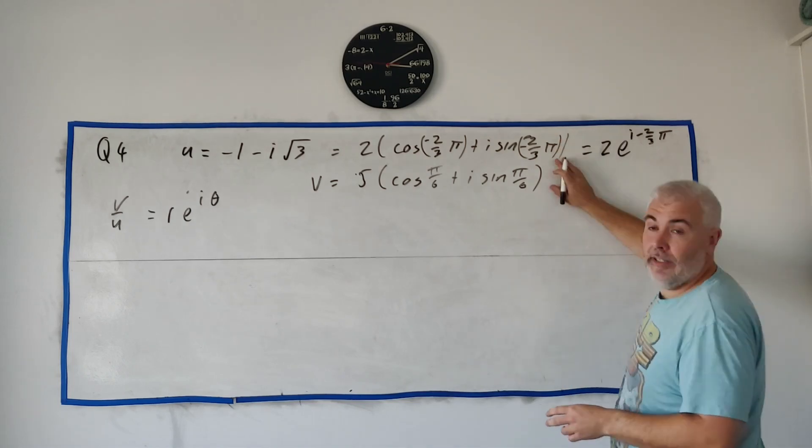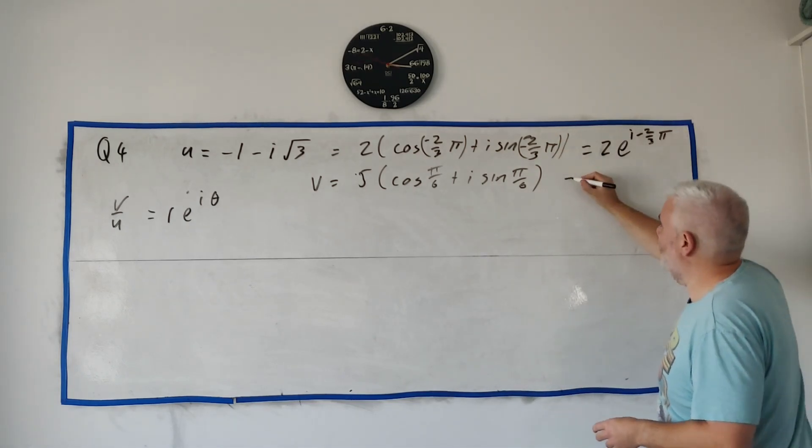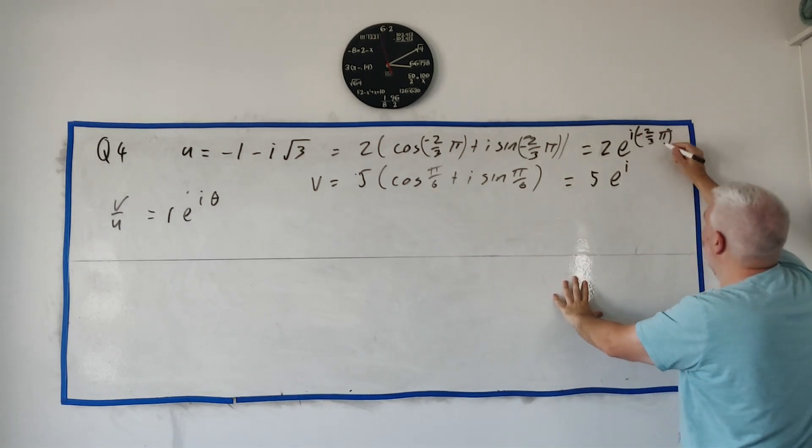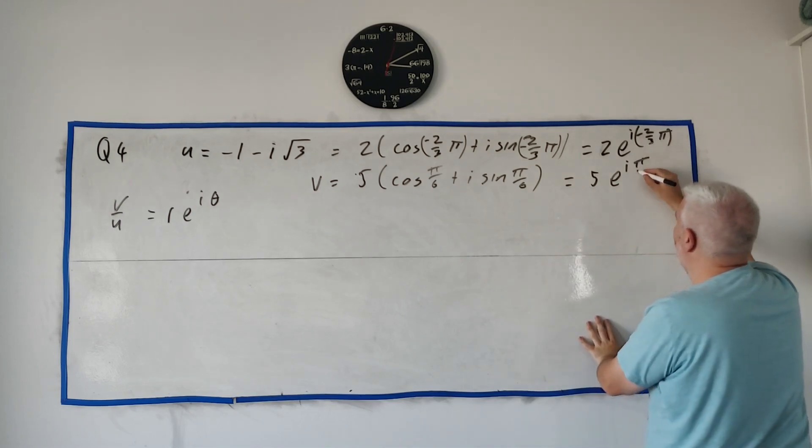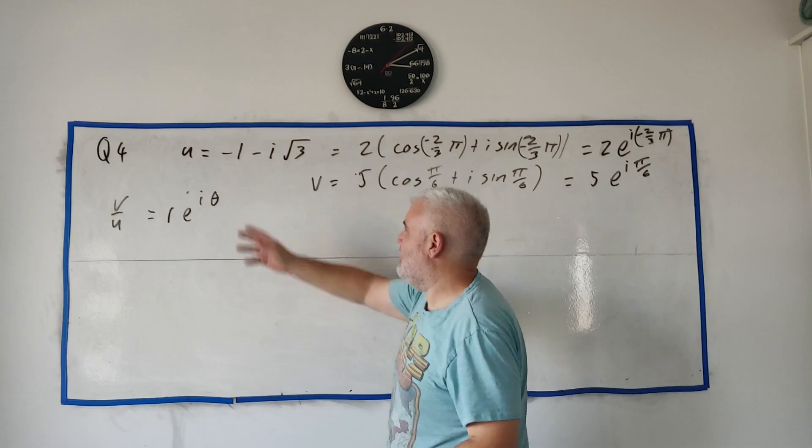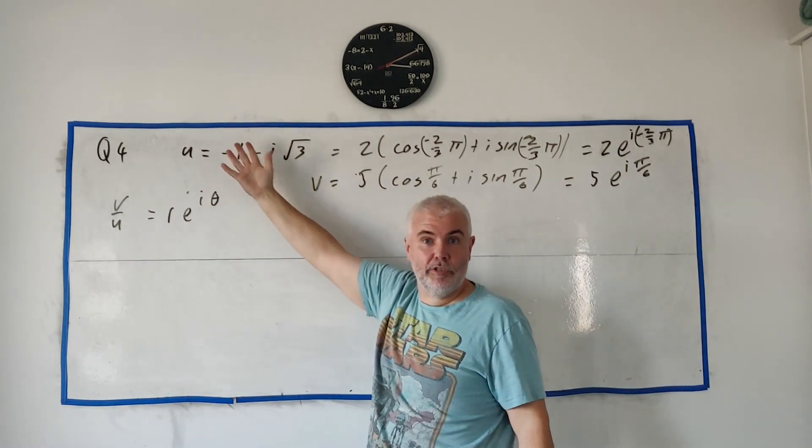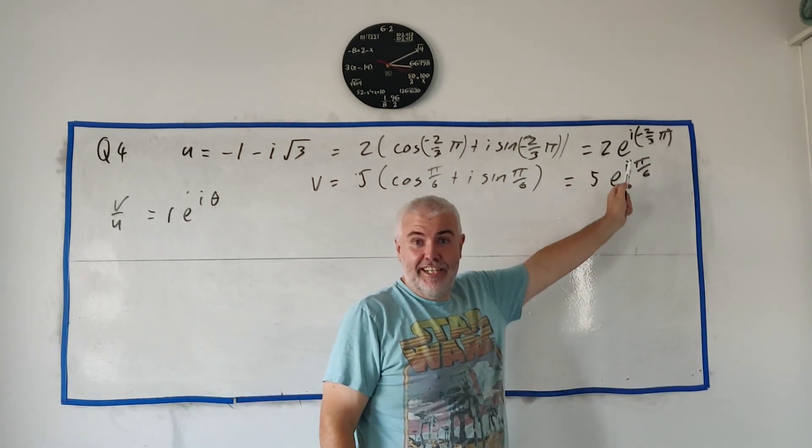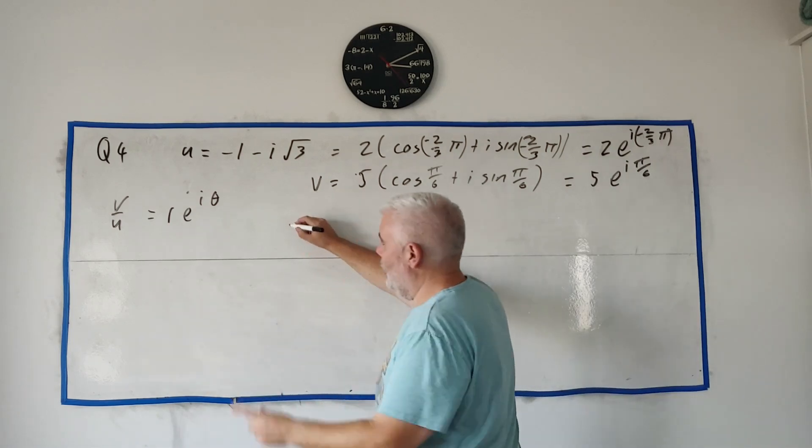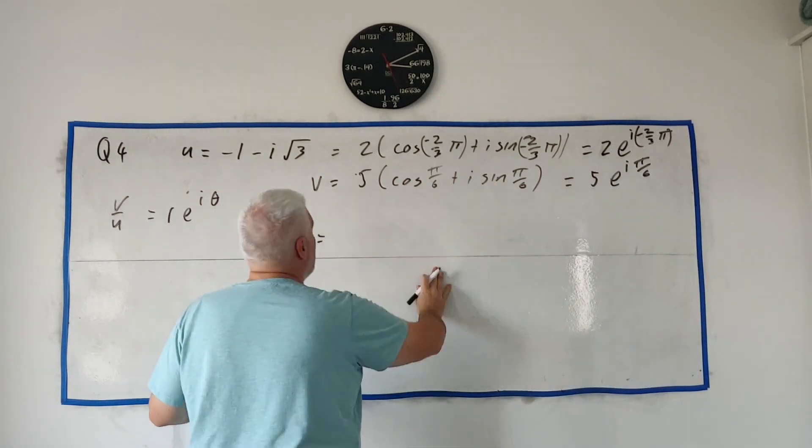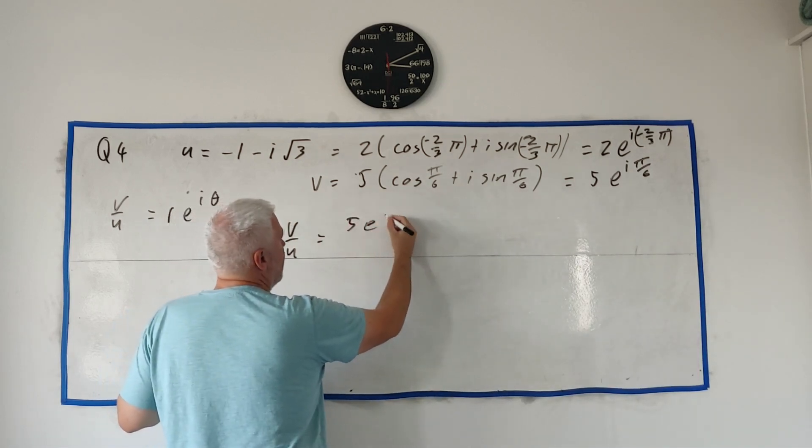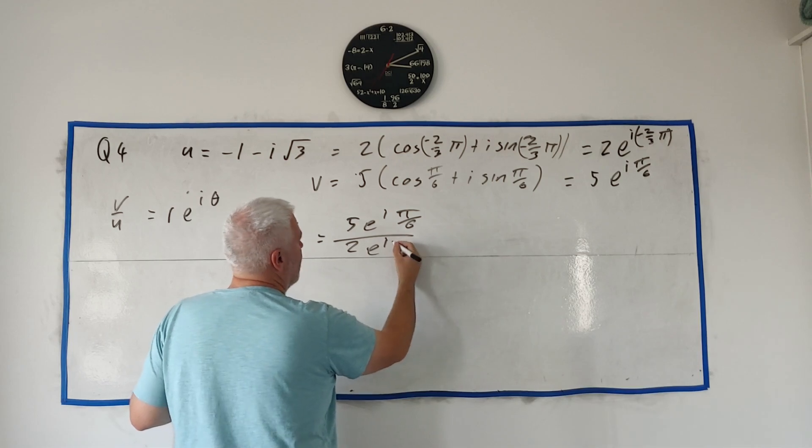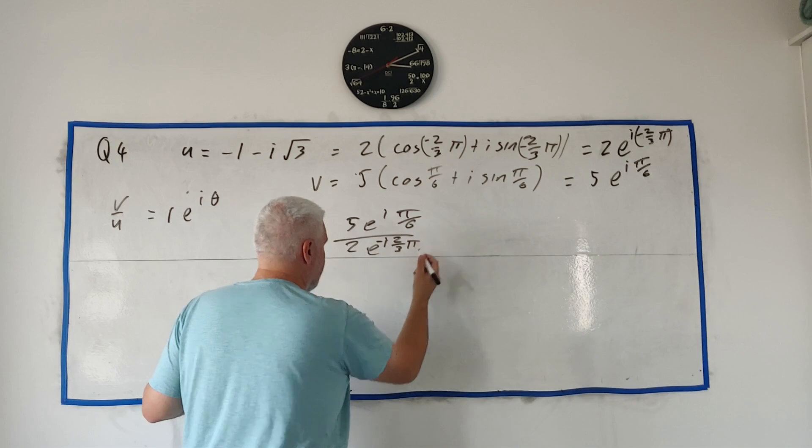So when they want you to divide these two together, let's change them both into this form. Change this one into it. It just becomes five out front, e to the power of i, let's put a bracket around that just so it's clear, i multiplied by pi over six. Okay, difficult to divide these two. It's, although we learn how to do it, it's difficult to divide complex numbers written in scalar form, written in that form. But dividing these is actually quite easy. We'll do it right away now. V divided by u equals, V is the bottom one here. That's five e to the i pi over six divided by two e to the i multiplied by minus two over three pi.